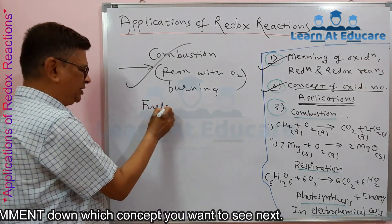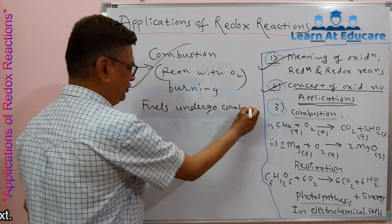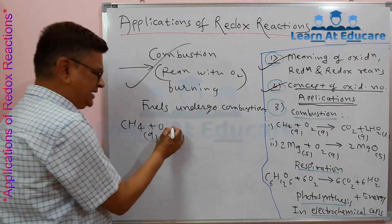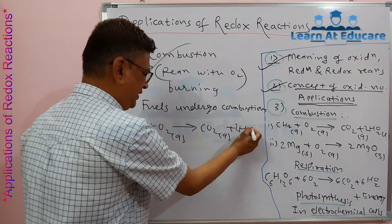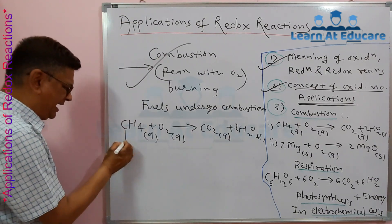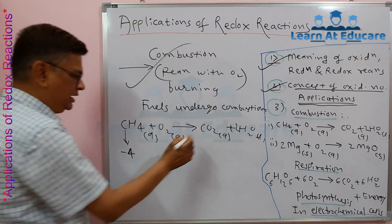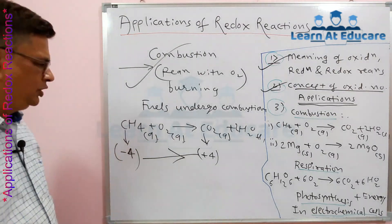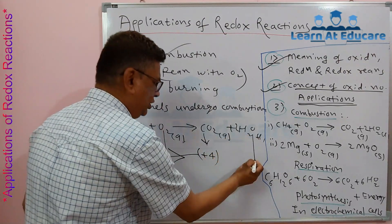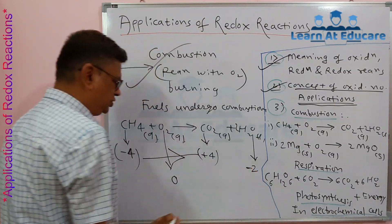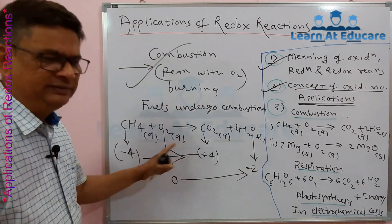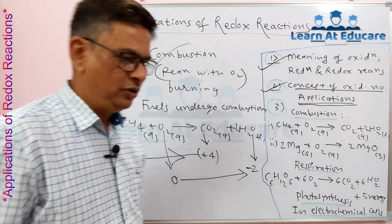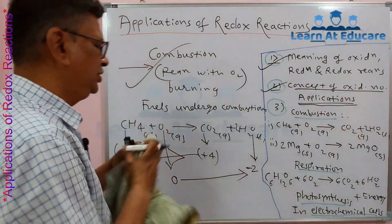For example, take gaseous fuel methane: CH4(g) + O2(g) → CO2(g) + 2H2O(l). In this reaction, carbon has an oxidation number of −4 in CH4 and +4 in CO2, so there is an increase in oxidation number of carbon. Oxygen goes from 0 to −2, a decrease. This increase and decrease together confirm it is a redox reaction.